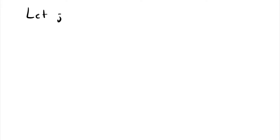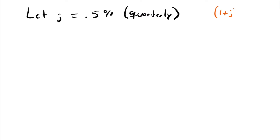If we let J be a quarterly interest rate of 0.5%, what would be our annual effective interest rate? Our formula is (1 + J) to the M periods per year, minus one, and that equals our interest rate I.